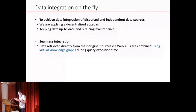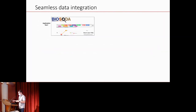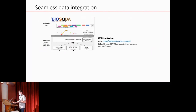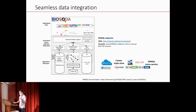As a computer scientist, it's easier to get computer systems to agree than people from different backgrounds dealing with different knowledge domains. So we push this problem to the technology to try to solve it — not perfectly, but as a first step for a quick solution. This seamless integration focuses on the web APIs provided by different data producers, making them accessible through a virtual knowledge graph.